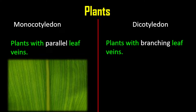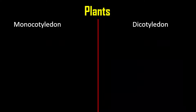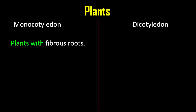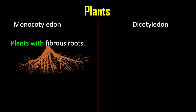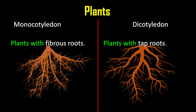For dicotyledon, there are plants with branching leaf veins. Notice the network pattern of the veins throughout the leaf, looking like a web or a net. For monocotyledon, there are plants with fibrous roots — all the roots come from one central point. Versus dicotyledon, they have tap roots, meaning there is one main root with other roots branching from it.